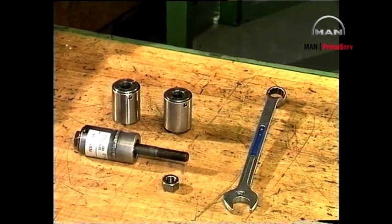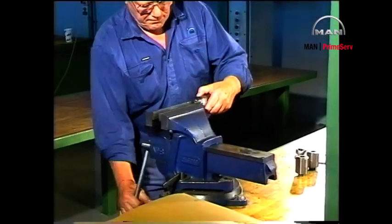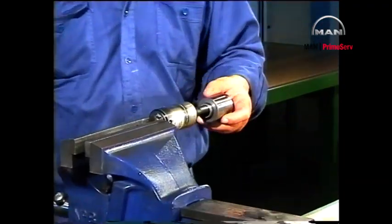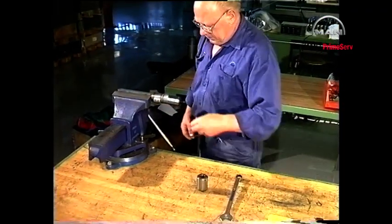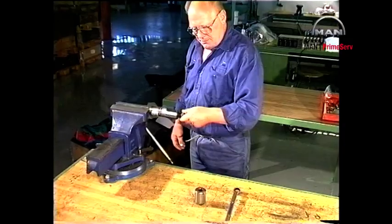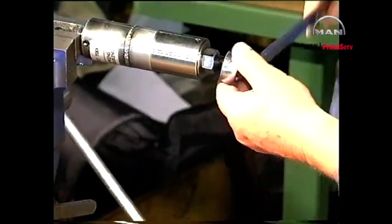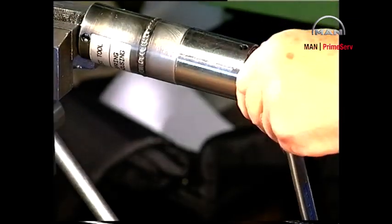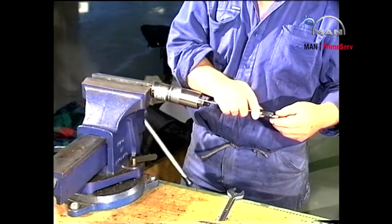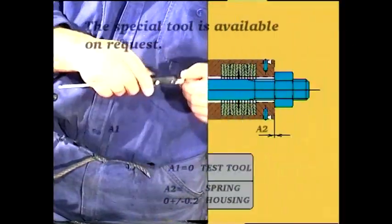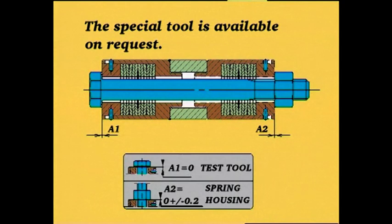A very important element in the correct functioning of the fuel valve, both during testing and in service, is ensuring that the spring housings apply the predetermined tightening force. To ensure that this force is present, a special tool has been designed to check the calibration of the spring housings. We recommend that the calibration of new and especially old spring housings be checked before they are mounted on the engine or on the fuel valve test rig.